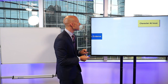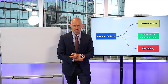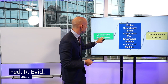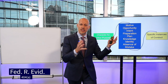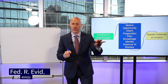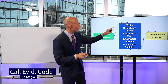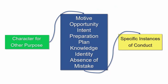But if character is not at issue, can someone offer character evidence for another purpose? The answer is yes. In the Federal Rules, Rule 404(A) says character evidence is generally inadmissible, but Rule 404(B) says it can be admitted for some other purpose. The same applies in California under Evidence Code 1101(B). The other purposes for which character evidence can be admitted include: motive, opportunity, intent, preparation, plan, knowledge, identity, or absence of mistake.